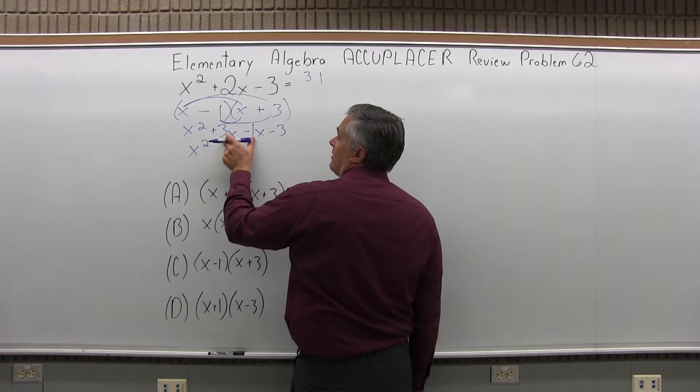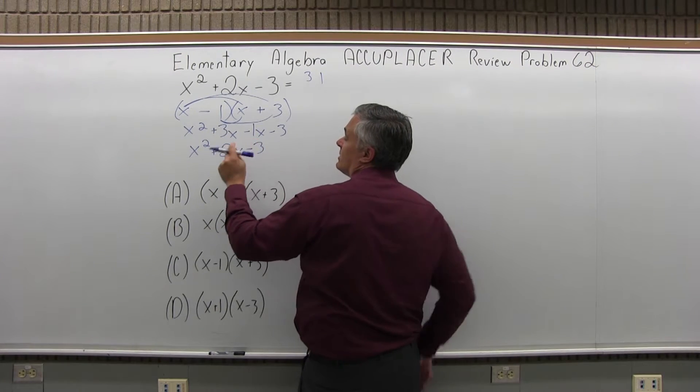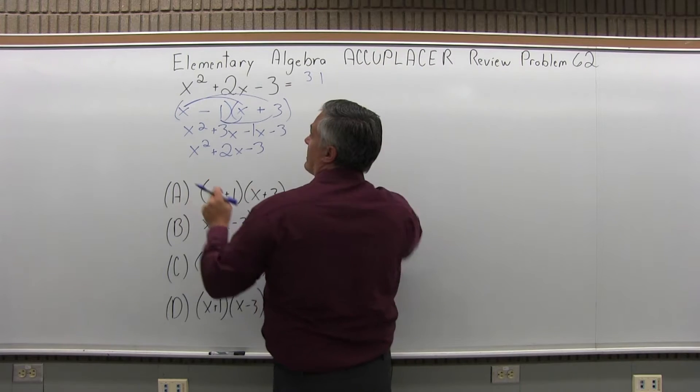I would have x squared, positive 3x, negative 1x would be plus 2x minus 3. And that checks out, it gives me back the original problem.